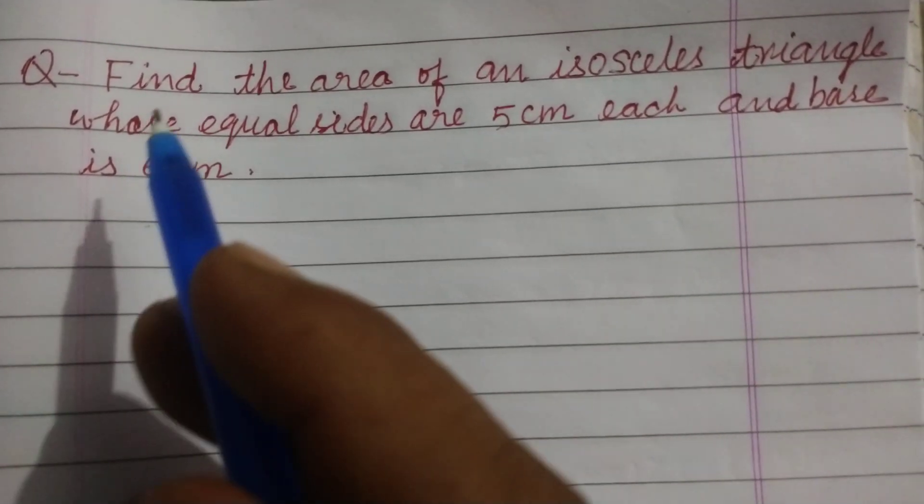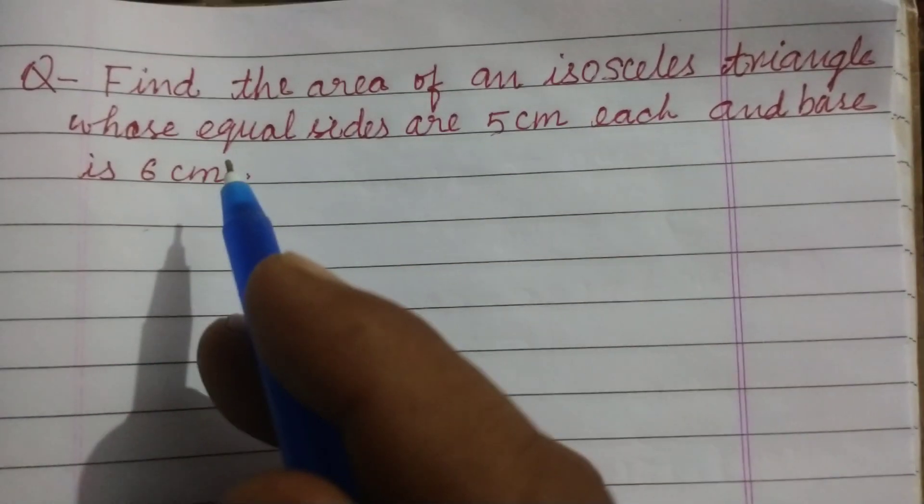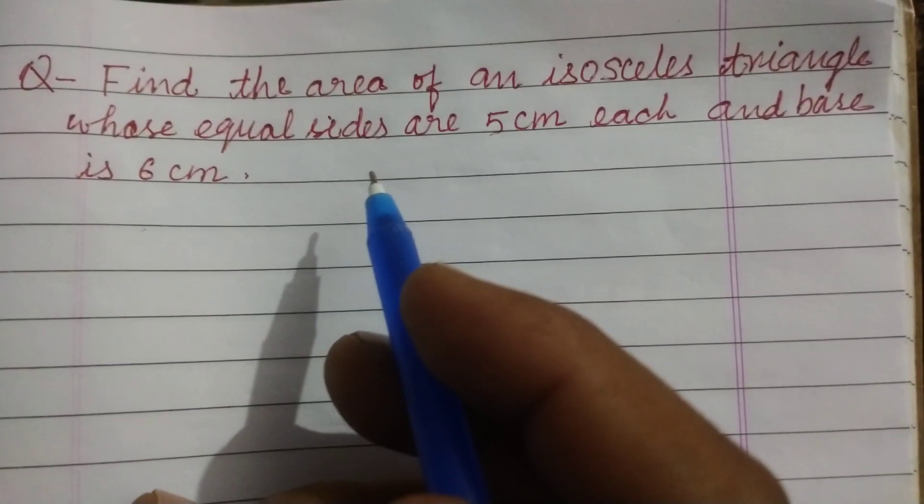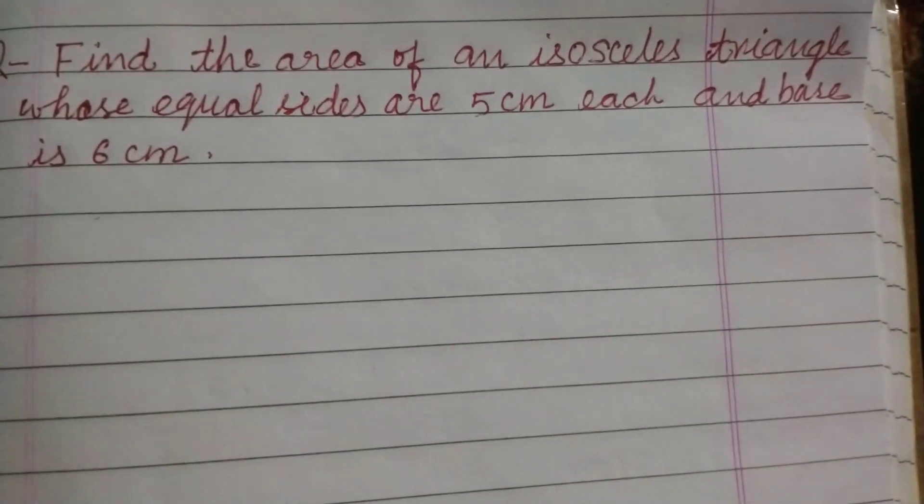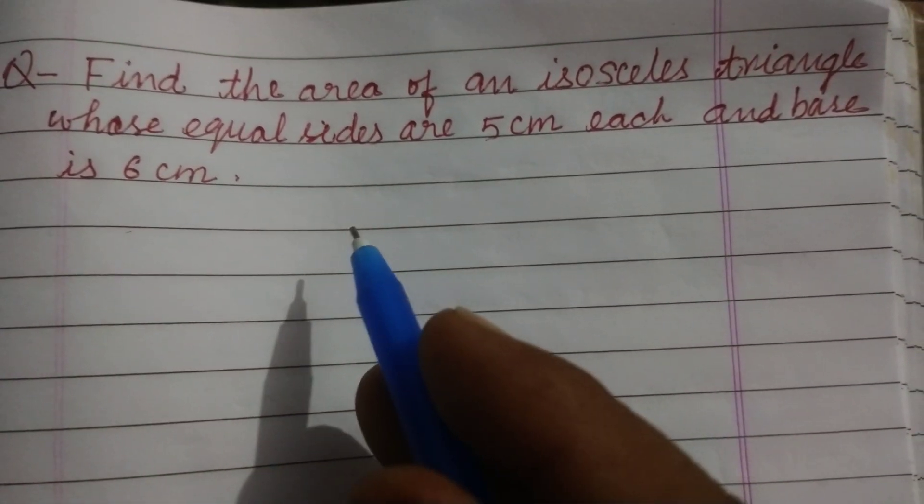Hello students, welcome to this YouTube channel. Find the area of an isosceles triangle whose equal sides are 5 cm each and base is 6 cm.